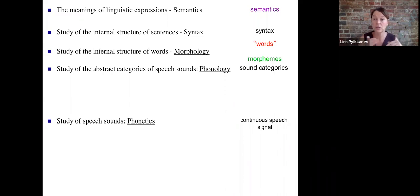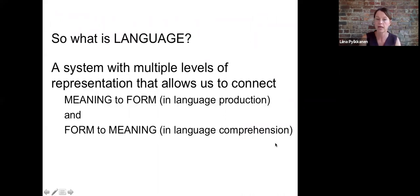And so now what we're going to do in this course is walk through all these different levels. It's kind of a soup-to-nuts approach. We'll be talking about the neuroscience of phonetics, phonology, morphology, syntax, and semantics, moving sort of bottom up, so from sound to meaning, and including also reading. Language is important. So what is language? Language is a system with multiple levels of representation that allows us to connect meaning to form—that's what we're doing when we're producing language—and then in the other direction, form to meaning, when we're comprehending language. Next up, we'll talk about what the brain is. See you then.